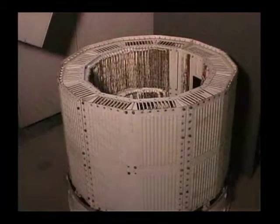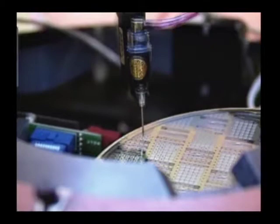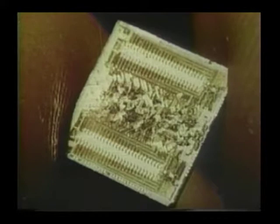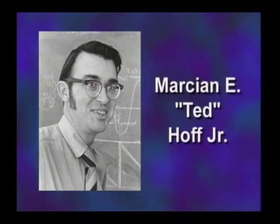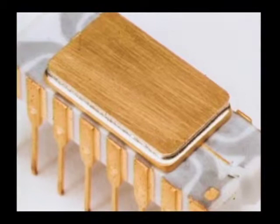Throughout the 1960s, integrated circuits were used in Minuteman missiles and the Apollo space missions, which had the goal of landing a human on the moon. As integrated circuits became smaller, it was realized an entire computer could be placed on a chip. In 1971, Ted Hoff of Intel Corporation produced the first commercially available microprocessor — the Intel 4004 — containing approximately 2,500 transistors, sparking the personal computer age.